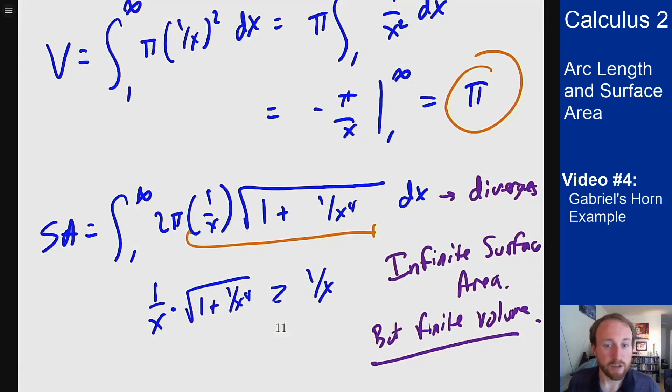This last example uses this formula to figure out the surface of the solid and shows that it is in fact one that seems strange in that it has a finite volume but an infinite surface area.